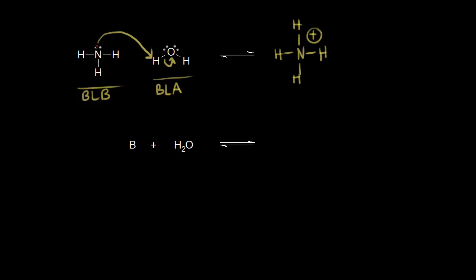The lone pair of electrons on the nitrogen picks up the proton and forms this bond, giving us NH4+. The electrons in blue come off onto the oxygen. The oxygen already had two lone pairs of electrons, and these additional electrons give it a negative one formal charge. So we form the ammonium ion, NH4+, and the hydroxide ion, OH-.